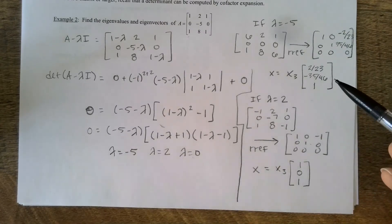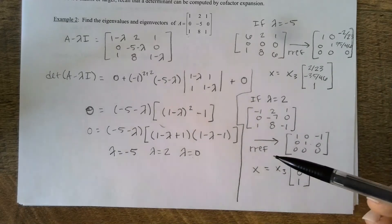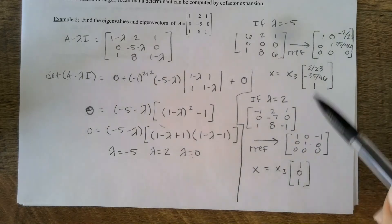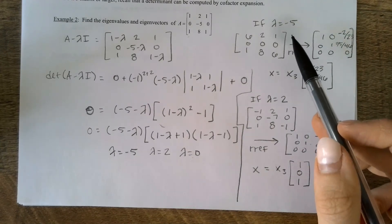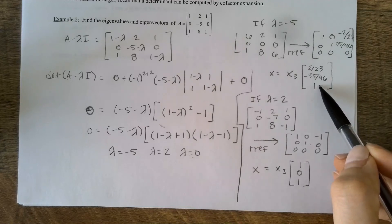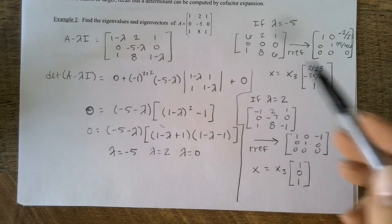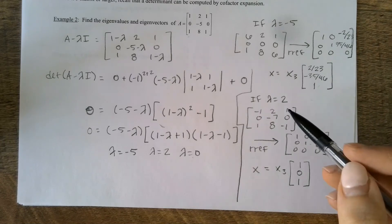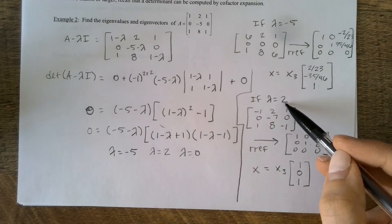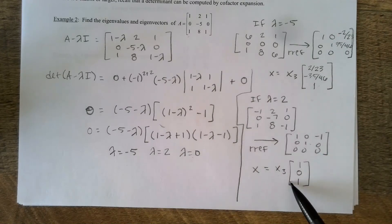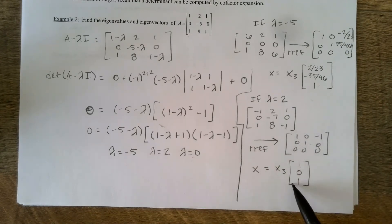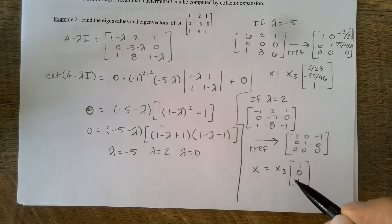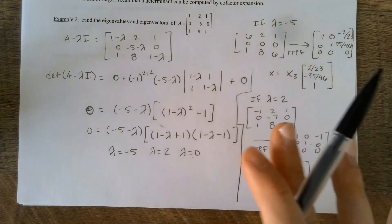If I was asked to find a basis for the eigenspace associated with lambda equals negative five, that would just be that first vector. And if asked for the basis of the eigenspace associated with lambda equals two, that would just be the second vector. Remember, a basis is the basic building blocks needed to span the whole space you're looking for. You could also find the eigenspace associated with lambda equals zero — I'm just skipping that for time.